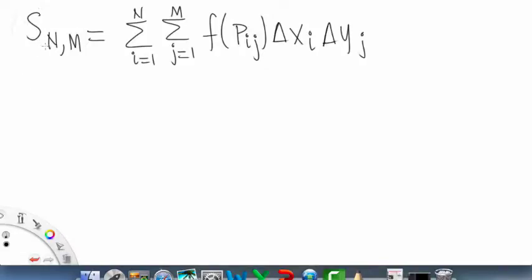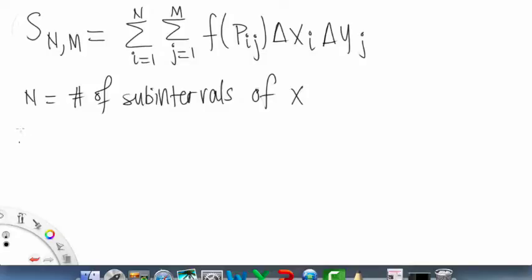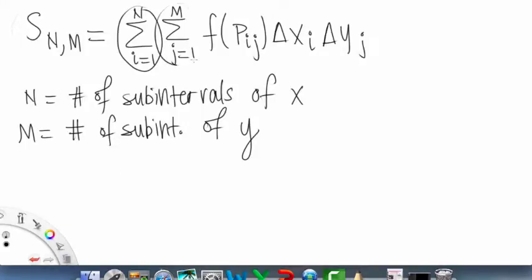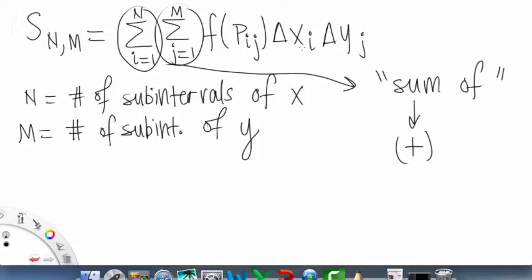This is f evaluated at p_{ij}, and then delta x_i, and delta y_j. Yes, this does look intimidating, but I'll break down what all the variables mean. s just means your sum, your Riemann sums. N is the number of subintervals of x. M, on the other hand, as you could probably guess, is the number of subintervals of y.